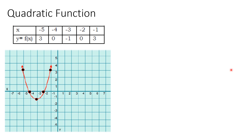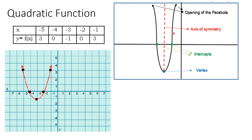Let's expand more about a parabola. A parabola can be determined by its opening — sometimes it opens upward like this, and sometimes it opens downward. It also has an axis of symmetry, and it has intercepts — the points where the graph intercepts the x-axis. And of course, the vertex, which is the lowest point of your parabola if it opens upward. If the parabola opens downward, the vertex is the highest point.